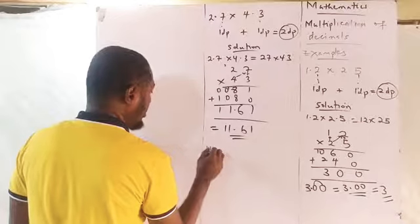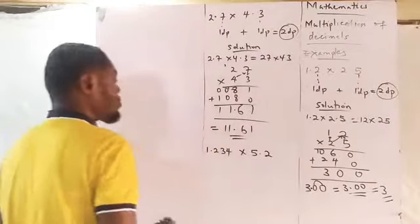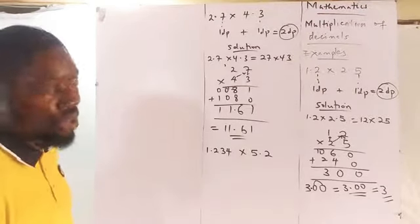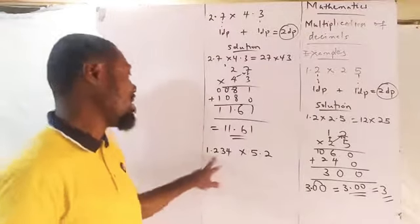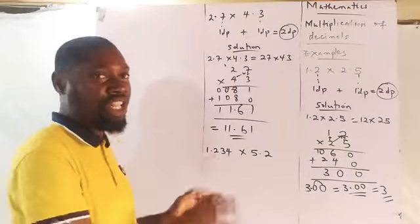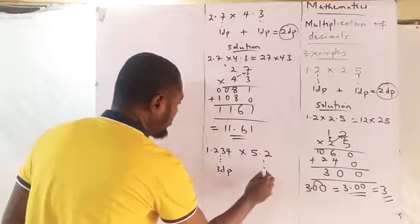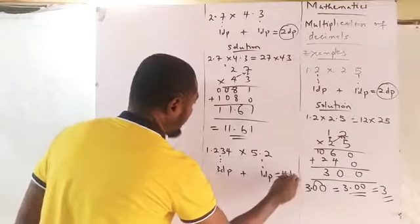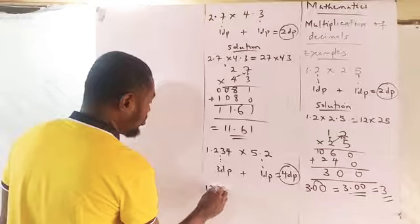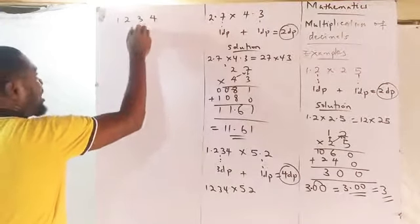Let us try another example: 1.234 times 5.2. I'll be careful with this example because this first decimal seems complex, but my explanation will make it clear. This number is a 3 decimal place number, this is a 1 decimal place number. Add them — you get 4 decimal places. Circle it. Then multiply without the point: 1234 times 52.